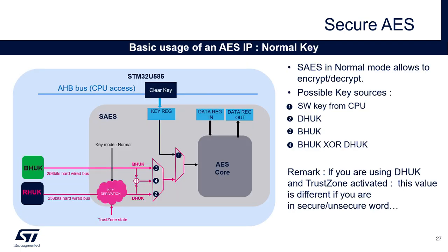In the normal key mode, we have the four possibilities for key sources. In this mode, the DHUK can have two different values depending on the TrustZone execution state — secure or unsecure.